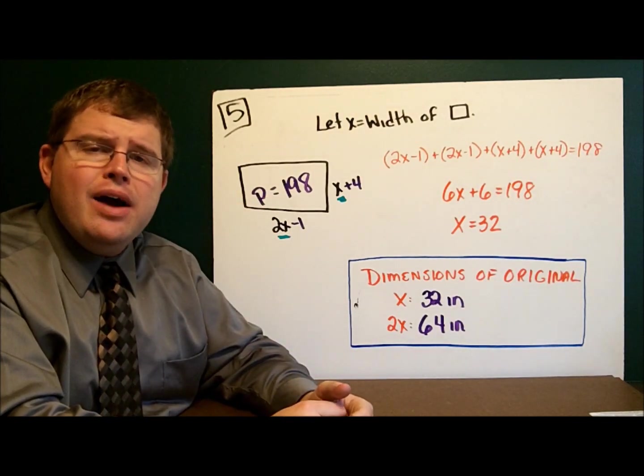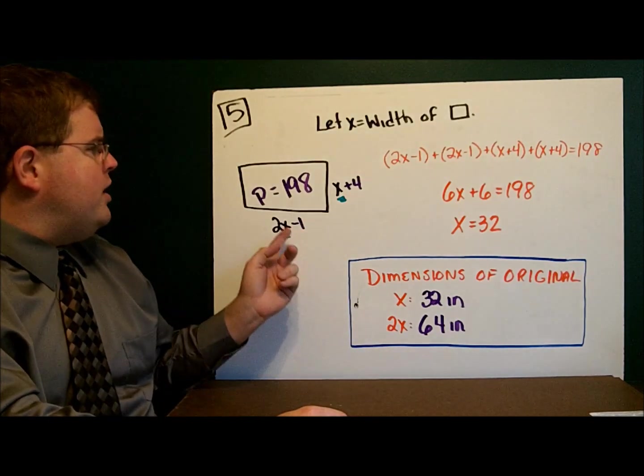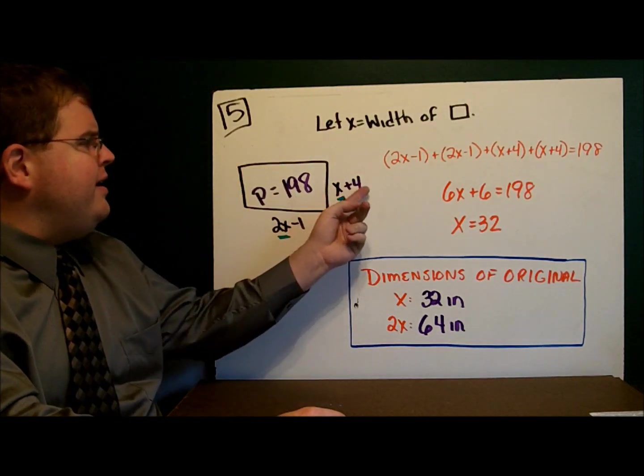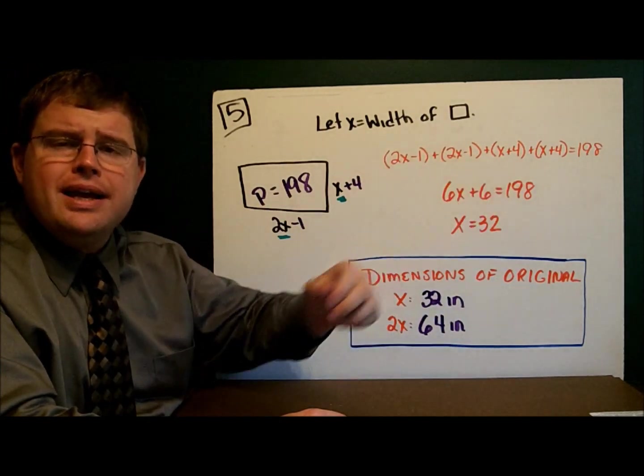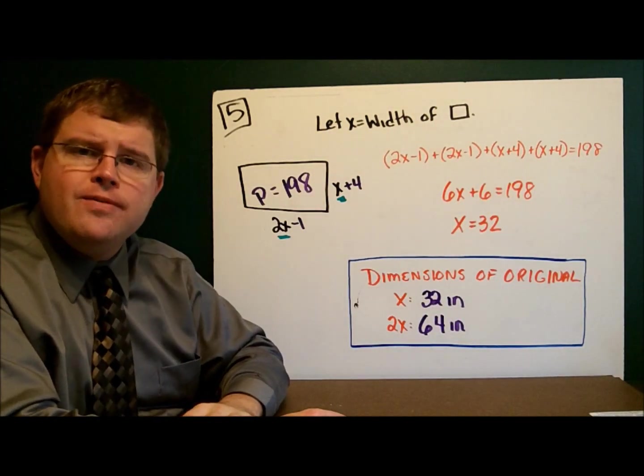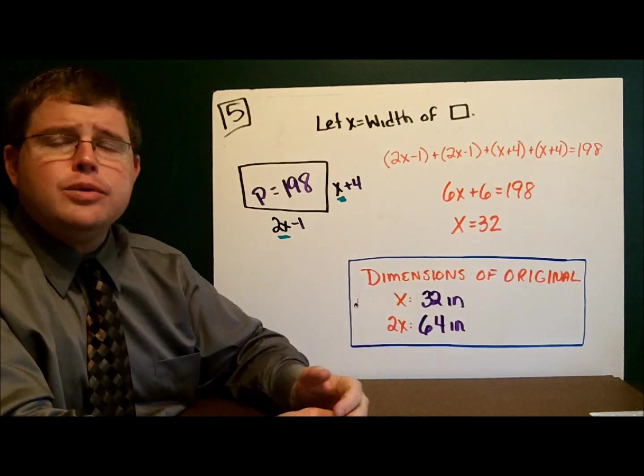So now I write my equation, 2x minus 1, 2x minus 1, x plus 4, x plus 4. Add them together, we get 198. Solve the equation, we get x equals 32.